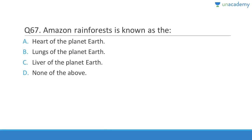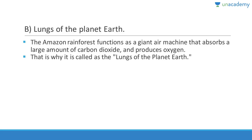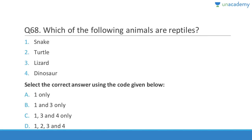Question 67: The Amazon rainforest is known as the lungs of the planet Earth, because it produces so much oxygen. The Amazon rainforest functions as a giant air machine that absorbs a large amount of carbon dioxide and produces a huge amount of oxygen — that is why it is called the lungs of the planet Earth, and we should avoid cutting it down.